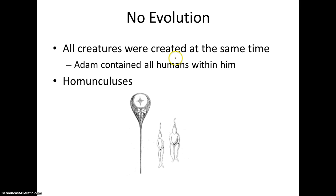Meaning that all creatures were created at the same time. So that means human beings, cats, dogs, everything was created at the same time. And we don't have a common ancestor or any of that. So that is what preformation states. And it also says that Adam contained all humans within him.